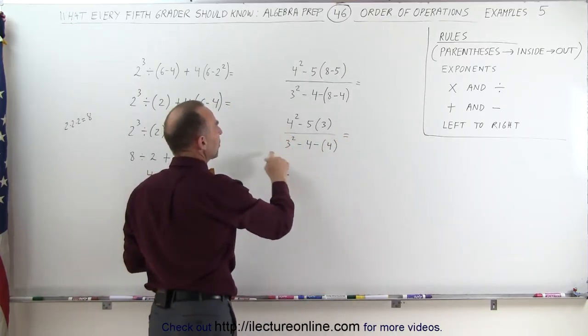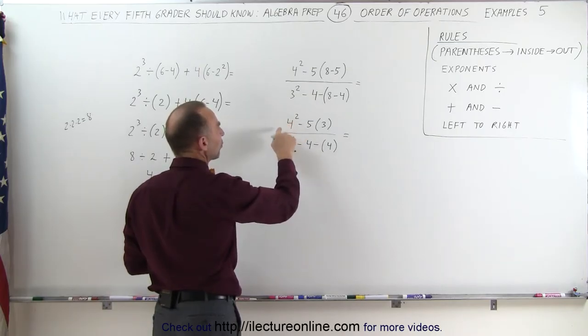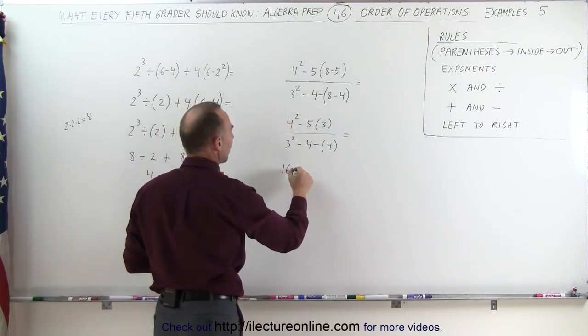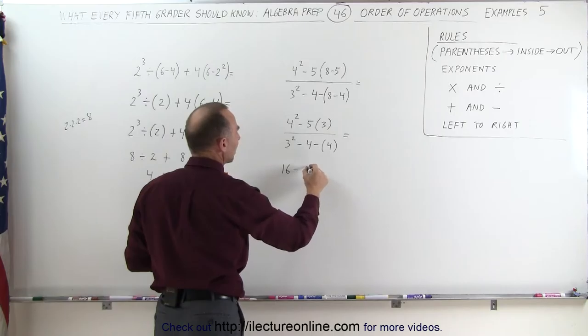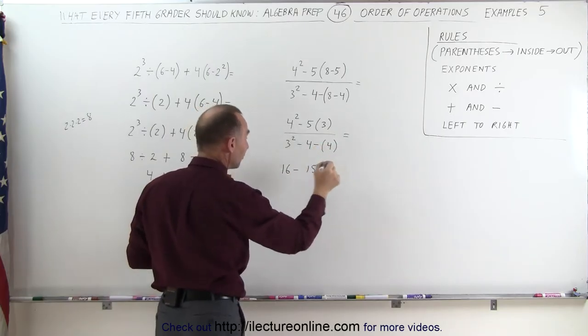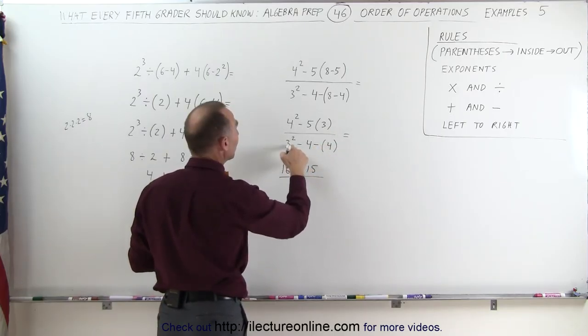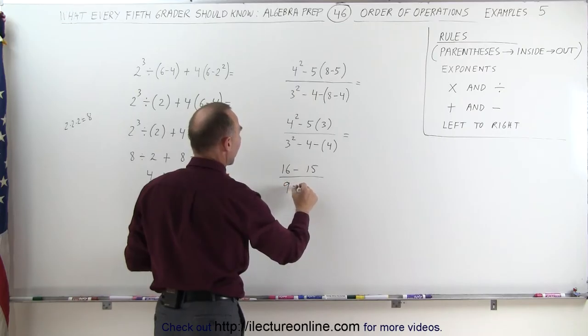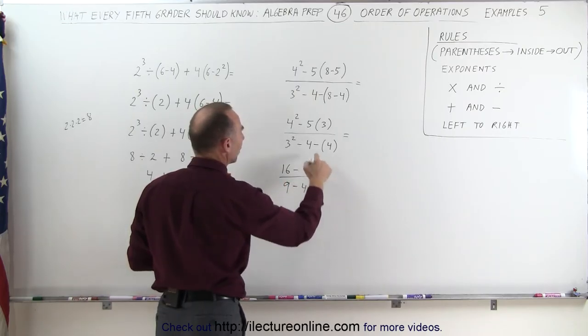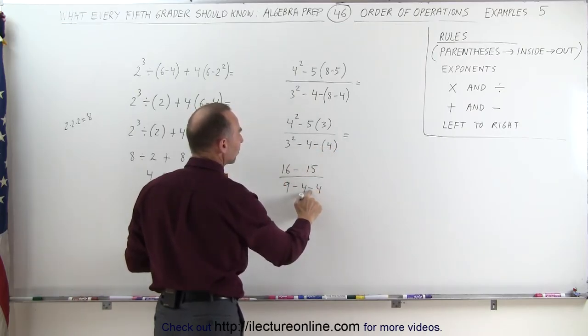Now let's do the exponents. 4 squared, that means 4 times 4 which is 16 minus 5 times 3 which is 15 divided by 3 squared which is 9 minus 4 minus 4. We can remove the parentheses because we have a minus there.